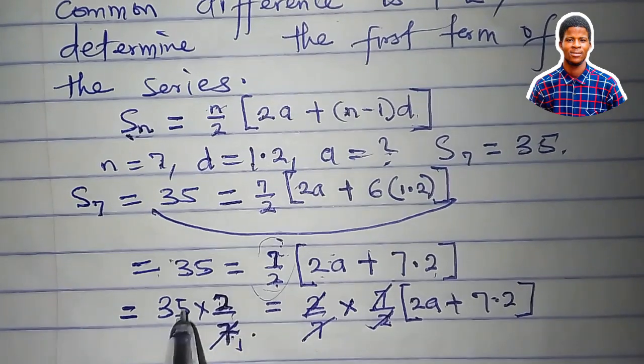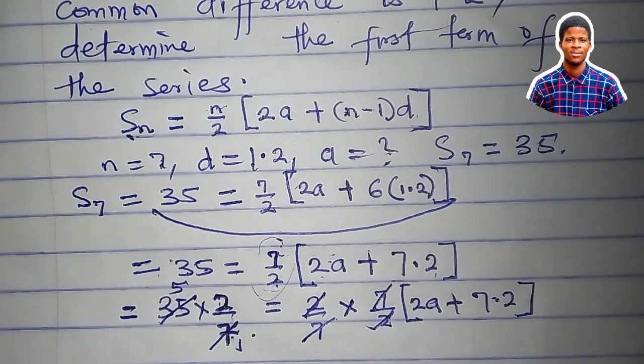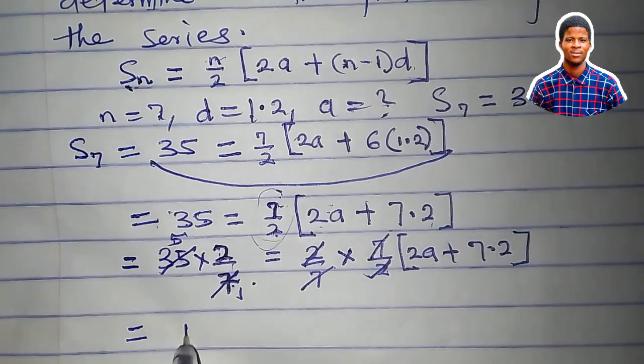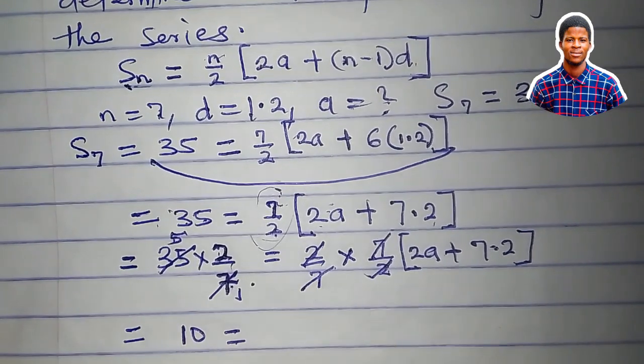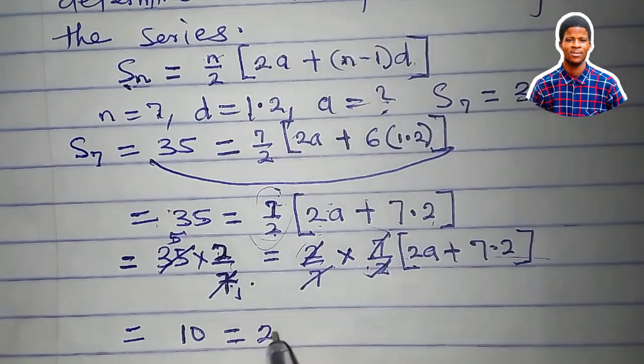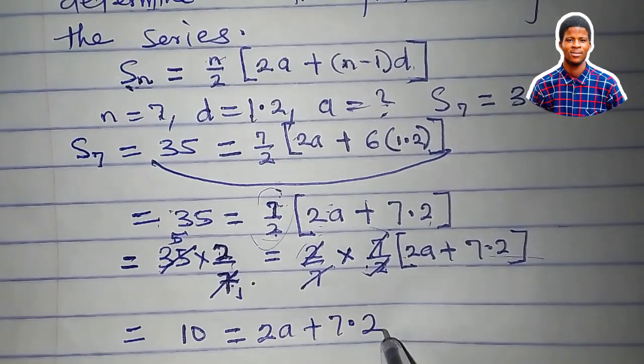7 here is 1, 7 here is 5. So what we have now says 5 times 2 is 10. Everything here is 1. So these brackets can just open easily: 2a plus 7.2.